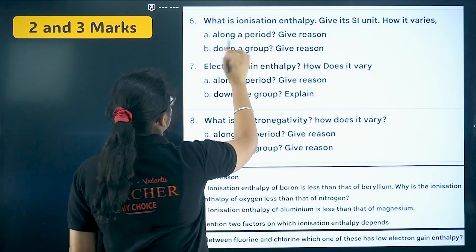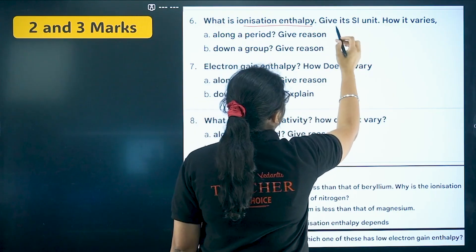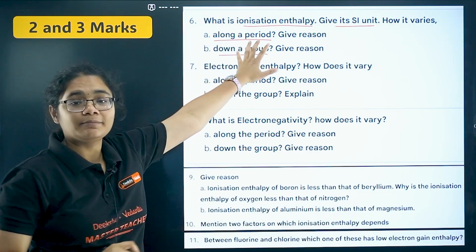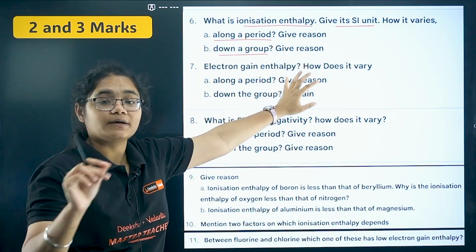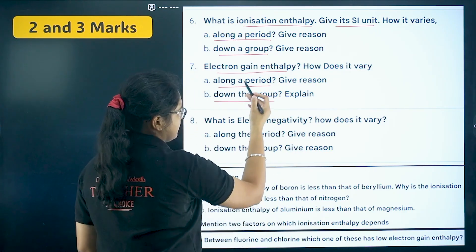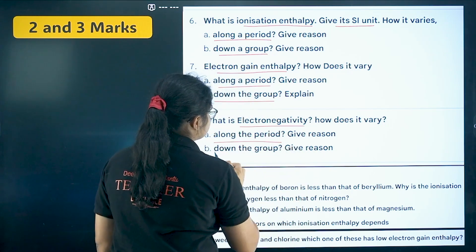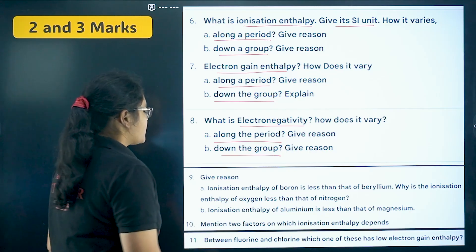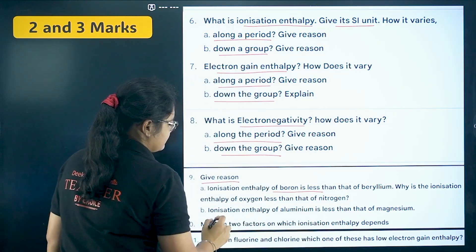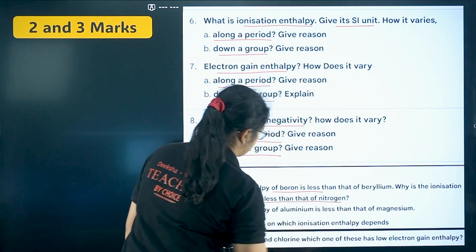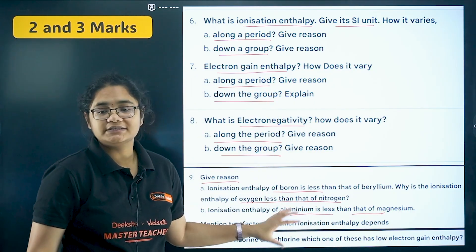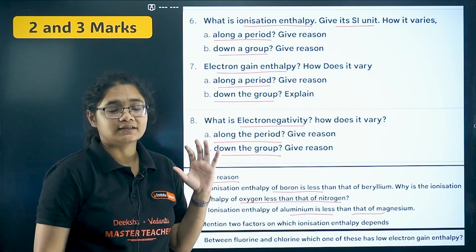Now coming to periodic trends for two and three markers: ionization enthalpy and its SI unit, then its variation along the period and down the group — this is a super important question. The definition of ionization enthalpy is very important and should be written completely. Similarly, electron gain enthalpy — how it varies along the period and down the group. Then electronegativity and its trend along the period and down the group. For 'give reason' questions: ionization enthalpy of boron is less than beryllium, ionization enthalpy of oxygen is less than nitrogen, and ionization enthalpy of aluminium is less than magnesium — these reasoning-based questions have been repeated over years.